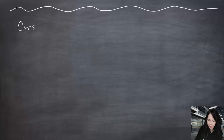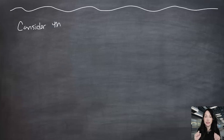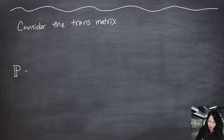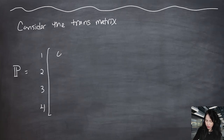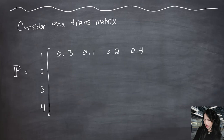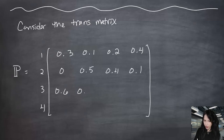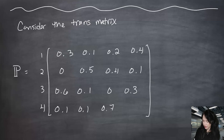Consider the following transition matrix on state space {1, 2, 3, 4}. The top row is 0.3, 0.1, 0.2, 0.4. The next row is 0, 0.5, 0.4, 0.1. The third row is 0.6, 0.1, 0, 0.3. And the final row is 0.1, 0.1, 0.7, 0.1.